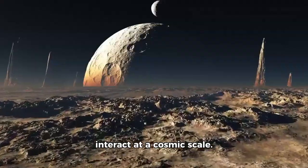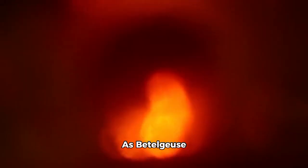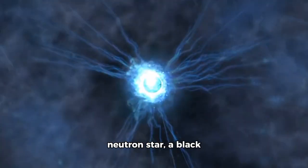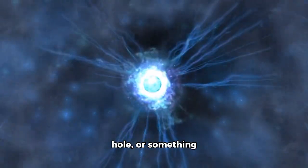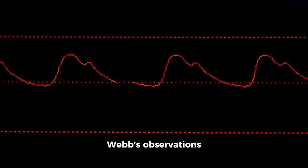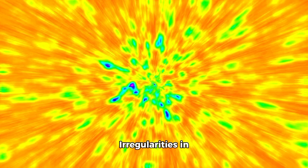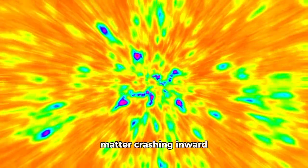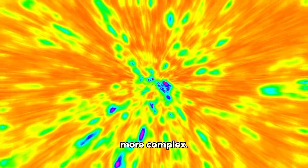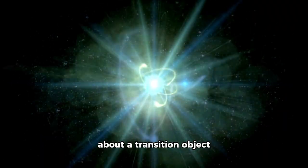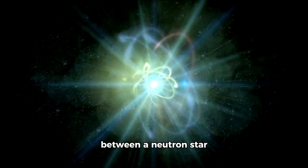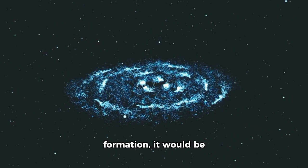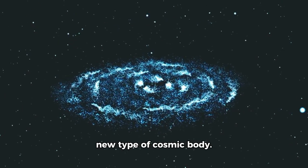As Betelgeuse shatters, a fundamental question resurfaces: what will be left? Will it collapse into a neutron star, a black hole, or something entirely different? Webb's observations suggest the collapse is not symmetrical. Irregularities in magnetic fields, plasma voids, and evidence of matter crashing inward hint at something far more complex. Scientists now speculate about a transition object, a hypothetical state between a neutron star and a black hole. If Webb has indeed captured one in formation, it would be the first proof of this new type of cosmic body.